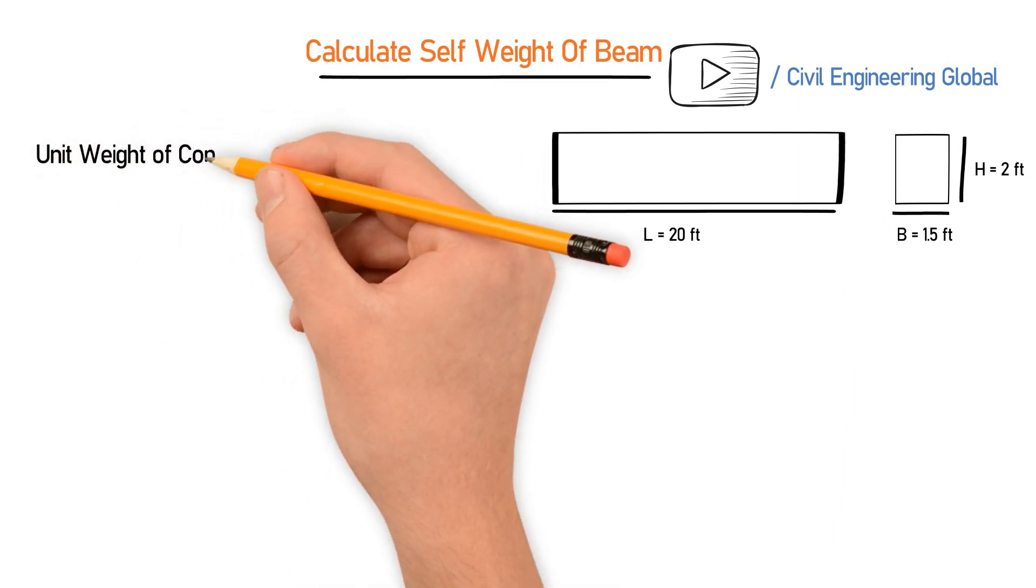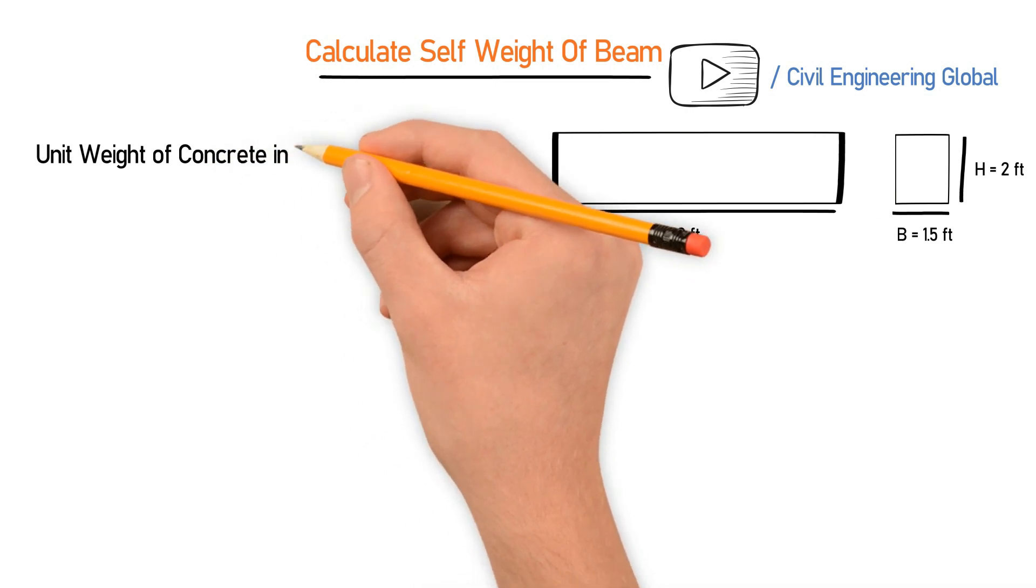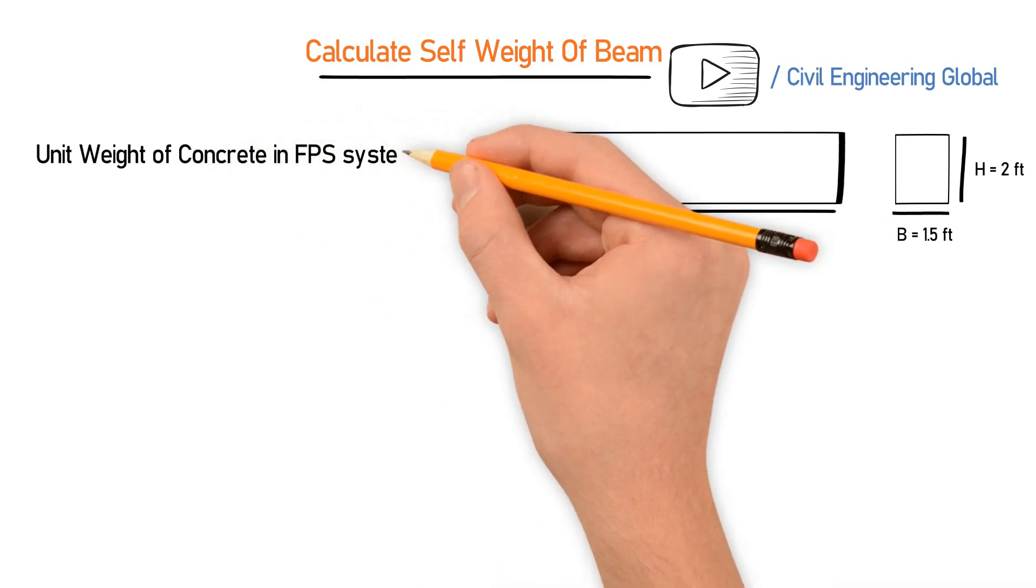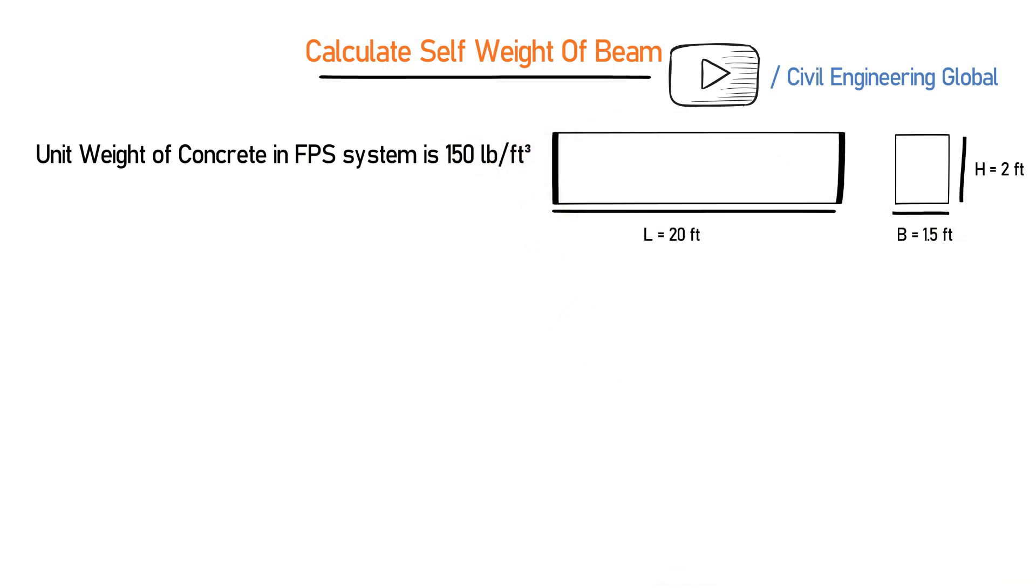As we all know, the standard unit weight of concrete in the FPS system is 150 pounds per cubic foot.